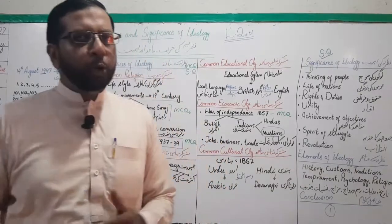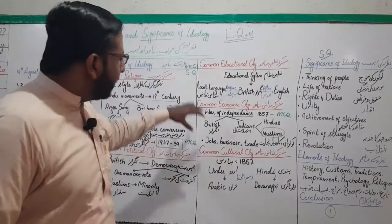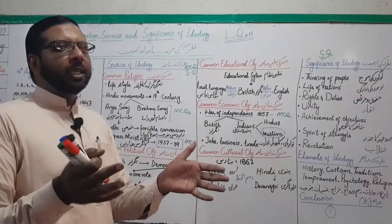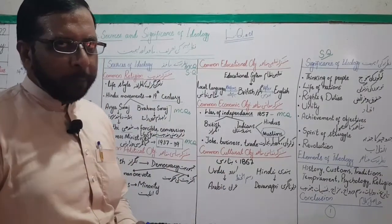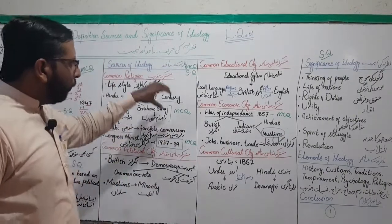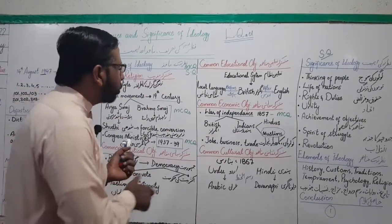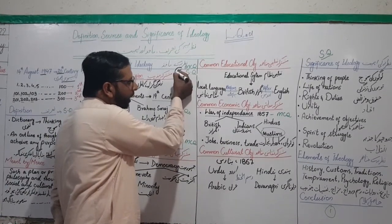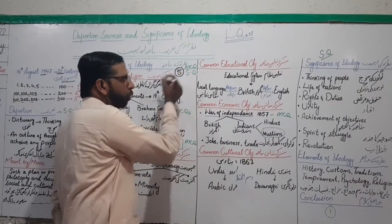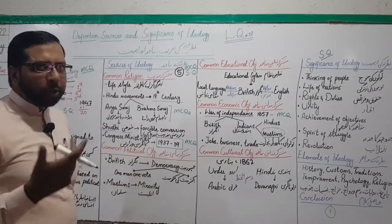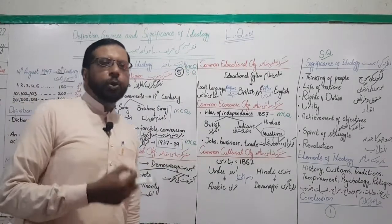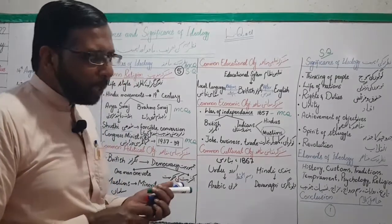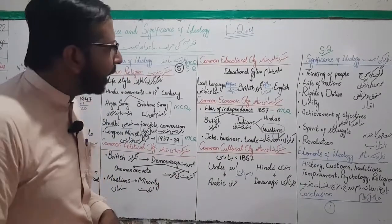Next part is sources of ideology — nazriya ke makhaz. Woh kaun si chizein hain jinki wajah se nazriya banta hai? There are total five sources — five major sources. As an MCQ, you may be asked the total number of sources of ideology. Similarly, as a short question: 'Write the sources of ideology — nazriya ke makhaz likhen.' If such a short question comes, you have to write the names of all five sources.